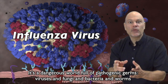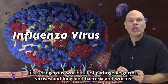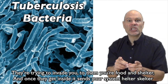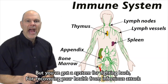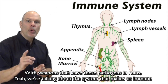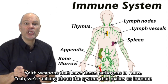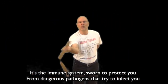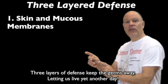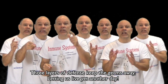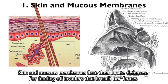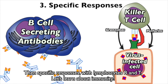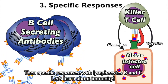[Song begins] It's a dangerous world full of pathogenic germs — viruses and fungi and bacteria and worms. They're trying to invade you; to them you're food and shelter. And once they get inside, they send your system helter skelter. But you've got a system for fighting back, for recovering your health from infectious attack, with weapons that leave these pathogens ruined. Yeah, we're talking about the system that makes us immune. It's the immune system, sworn to protect you from dangerous pathogens. Three layers of defense keep the germs away, letting us live yet another day. Skin and mucous membranes first, then innate defenses, for fending off invaders that breach our fences, then specific responses with lymphocytes B and T — let's learn about immunity.